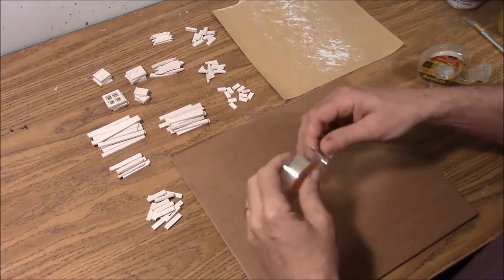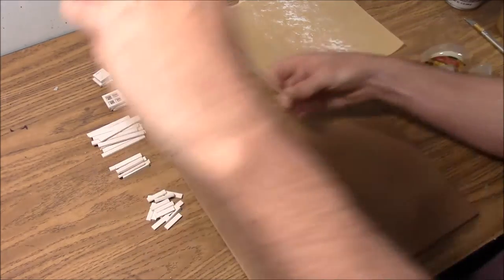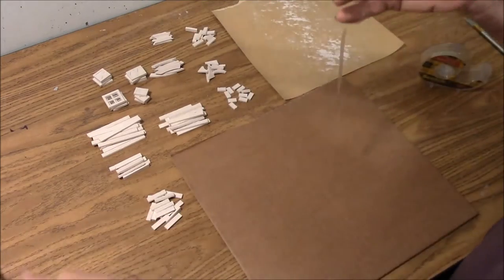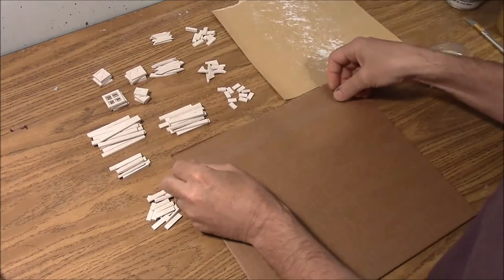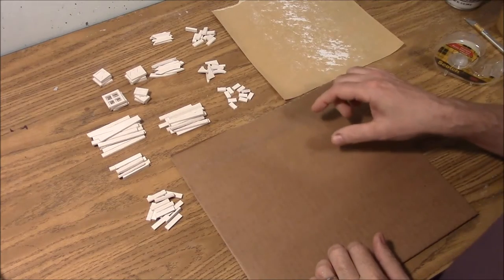So what you're going to do is put a strip down. Measure out a strip that goes all the way across your cardboard, stick it down, and then we're going to go ahead and stack our planks on it.